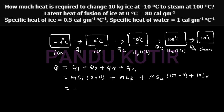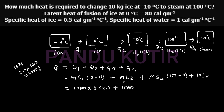Mass is equal to 10 kg, which equals 10,000 grams. Q1 equals 10,000 grams multiplied by specific heat capacity of ice 0.5, multiplied by 10 degrees. Q2 equals 10,000 multiplied by the latent heat of fusion.